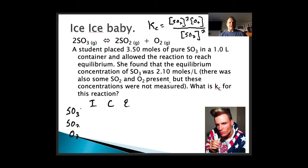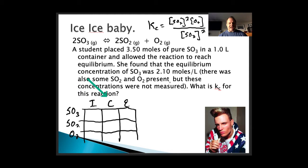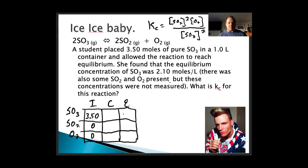I'm going to use my ICE table — ICE stands for Initial, Change, and Equilibrium. I've listed SO3, SO2, and O2 on the left with ICE across the top. The student placed 3.50 moles of pure SO3 in a one-liter container, so the initial concentration of SO3 is 3.50 M, while SO2 and O2 start at 0. At equilibrium, SO3 is 2.10 moles per liter, which I'll plug into the equilibrium row.